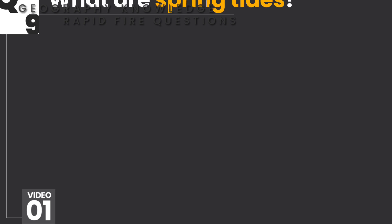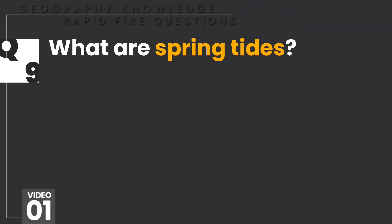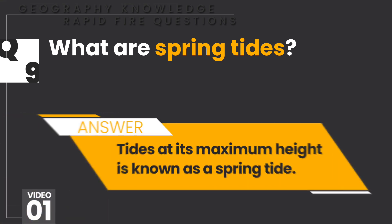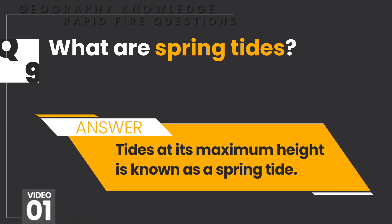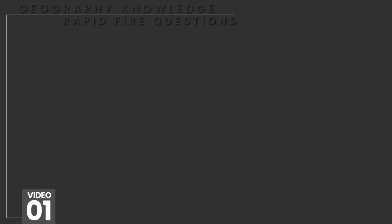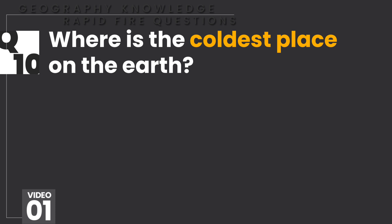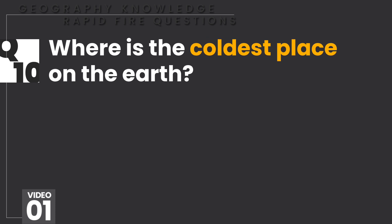Equinox means two periods in the year when the days and nights are equal. What are spring tides? Tides at their maximum height are known as spring tides. Where is the coldest place on earth?